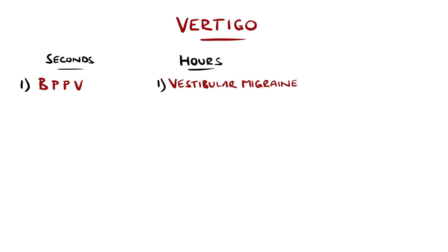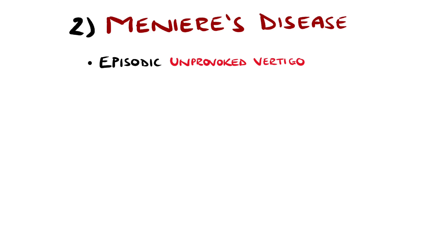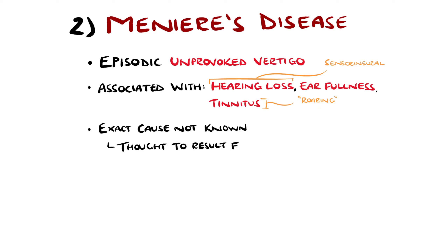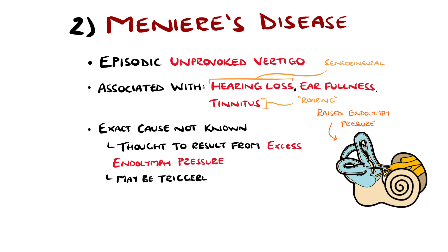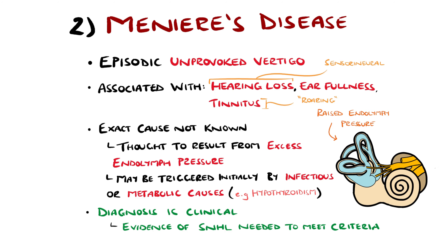Meniere's disease can also cause episodic, unprovoked vertigo lasting several hours. There is debate over how common this condition is, with some sources stating that it is a rare cause. It features vertigo alongside unilateral sensorineural hearing loss, ear fullness and tinnitus, often described as roaring tinnitus. The exact cause is not known, but can be triggered by infections or metabolic causes like hypothyroidism, and overall the pathology is thought to result from excess endolymph pressure. Diagnosis is clinical but does need evidence of sensorineural hearing loss documented through audiological testing.